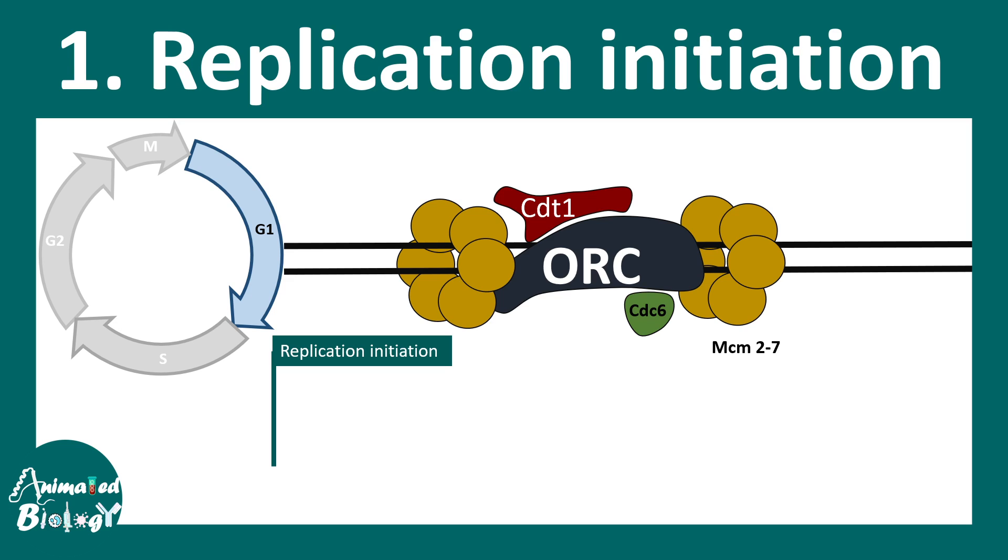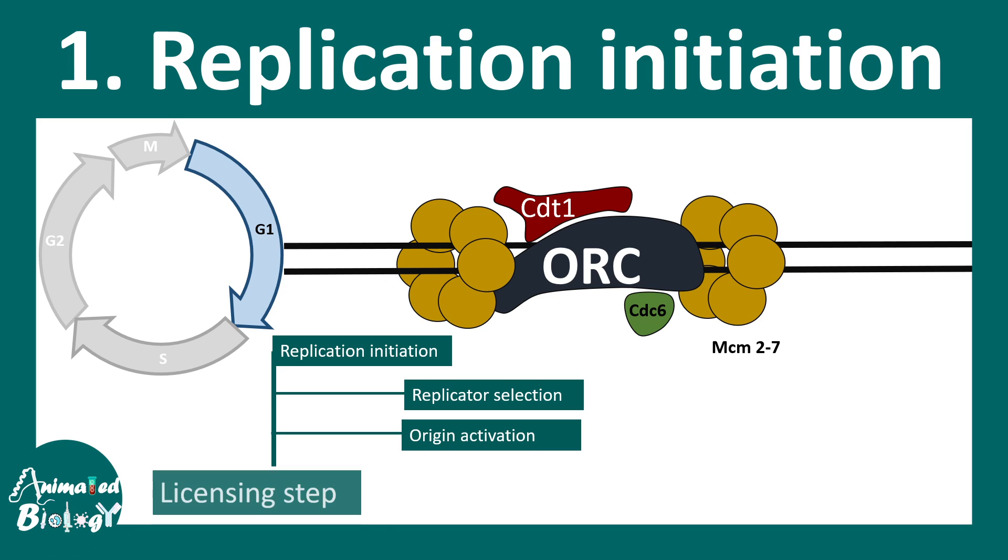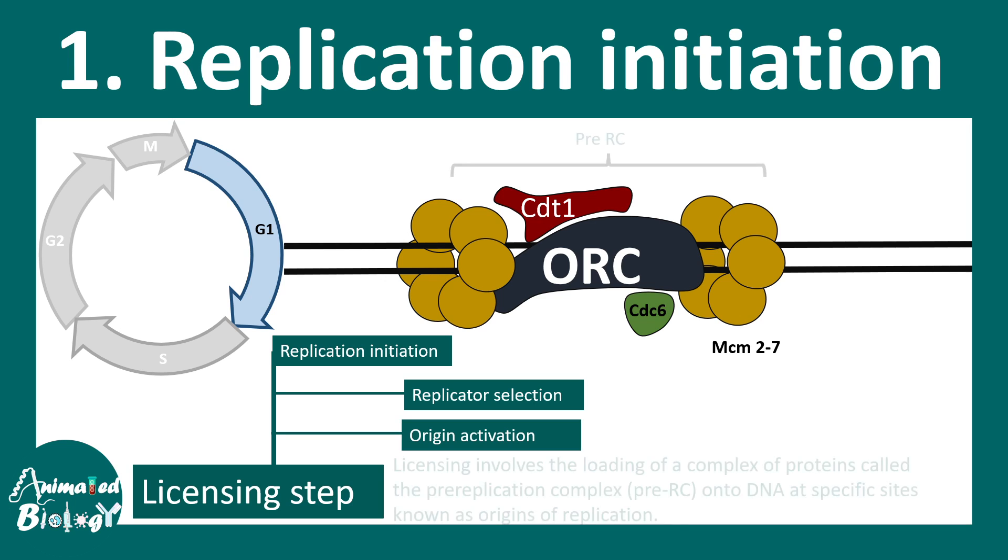So replication initiation event is broadly differentiated into two halves. One is the replicator selection where the portion of the DNA which would be replicated is selected. And then origin activation where the origin is activated with the help of specific molecules such as the cyclin-CDK complex. So this is a licensing event. Without activating the pre-RC, the replication cannot start and the bubble cannot form.